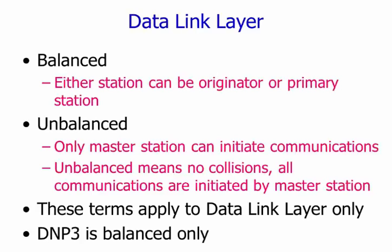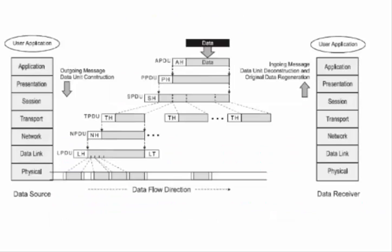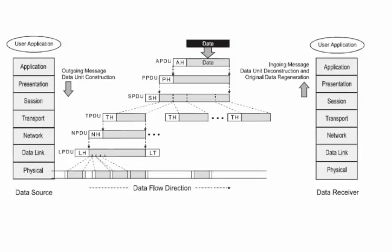I'm going to quickly show you the OSI model, and from that we're going to have a look at the DNP3 message structure. The OSI is not a protocol — it's a framework, but it's very extensive and complete. You can use the OSI model, the 7-layer model, to develop your own communications protocols.